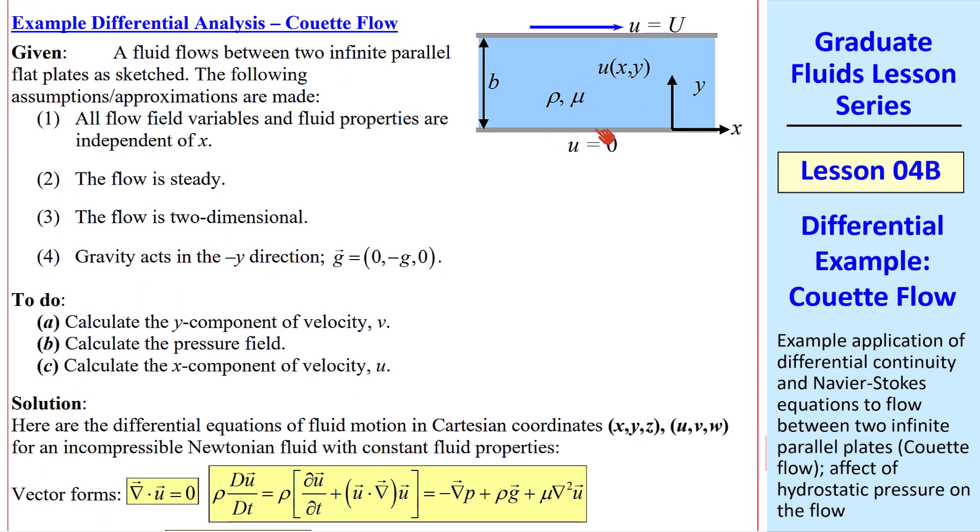Here's the setup. We have two infinite flat plates separated by distance b. These plates are infinite both in the x direction and in the z direction out of the page. The bottom plate is stationary and the top plate is moving at constant speed capital U.